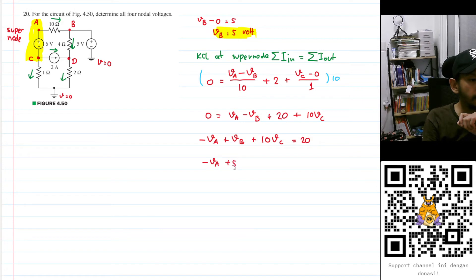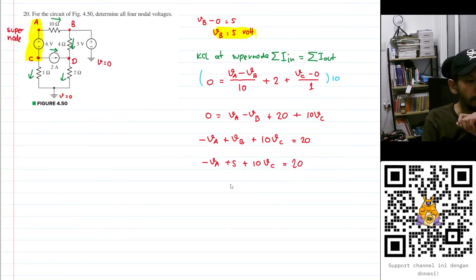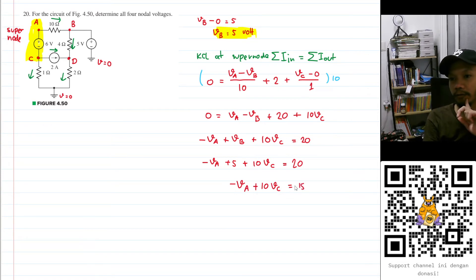Substituting VB = 5 volts: minus VA plus 5 plus 10VC equals 20, so minus VA plus 10VC equals 15. We'll call this Equation 1.